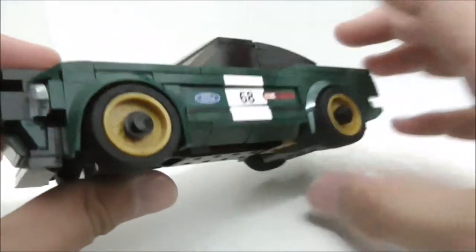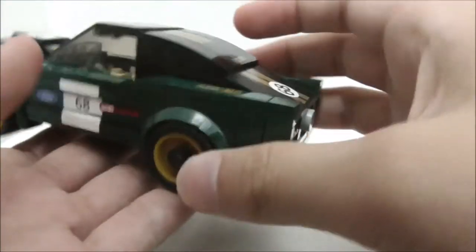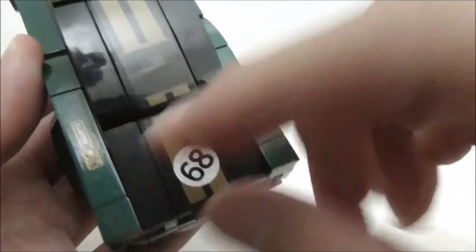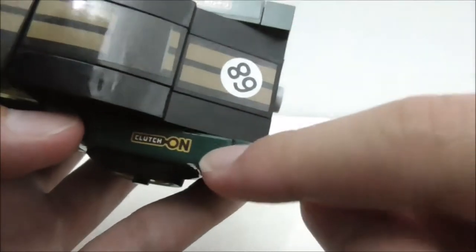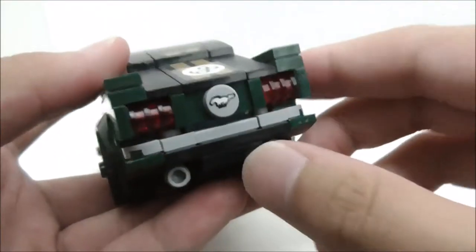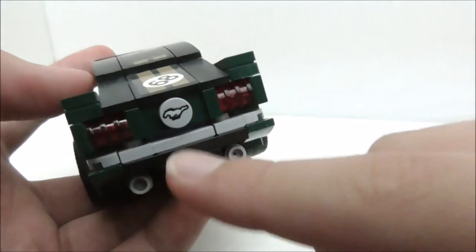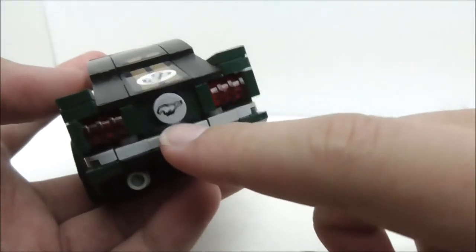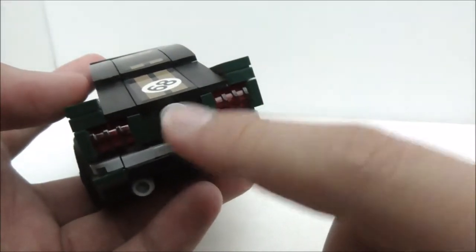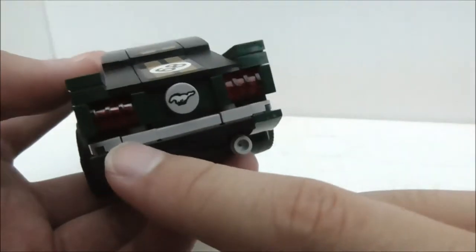And at the back here you have this decal which is this Clutchon company, and it's on both sides. And this is the back. I really like the back design. You have the Mustang logo which is printed, so that's definitely great.